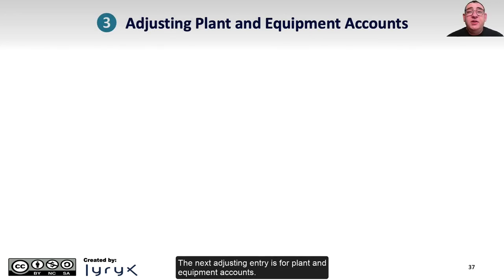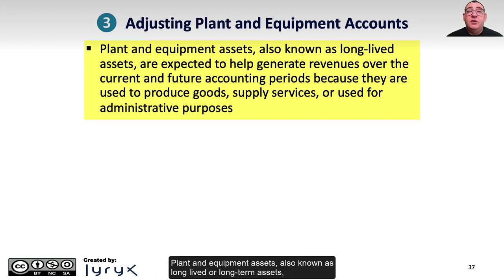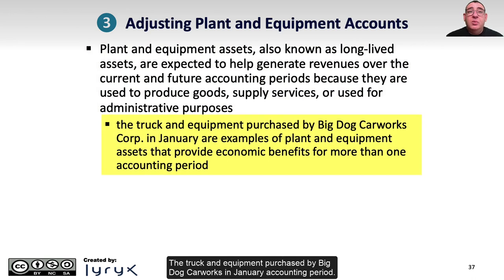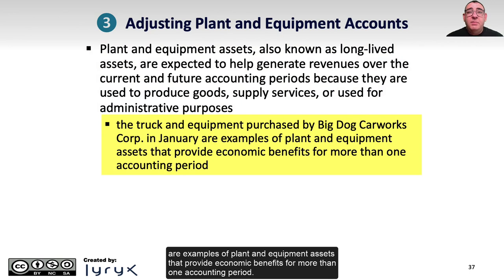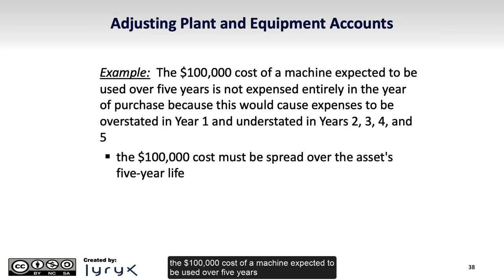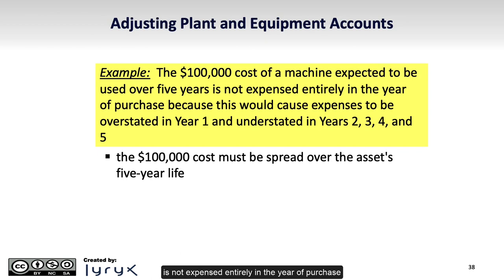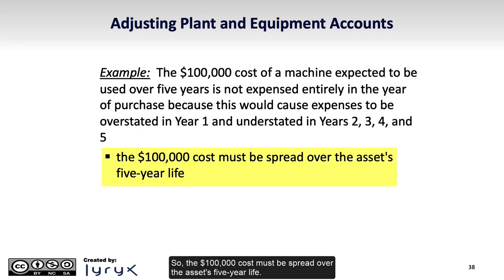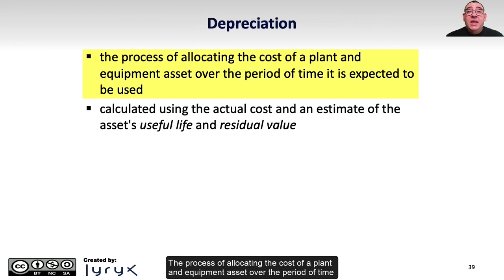The next adjusting entry is for plant and equipment accounts. Plant and equipment assets, also known as long-lived or long-term assets, are expected to help generate revenues over current and future periods because they're used to produce goods, supply services, or for administrative purposes. Because they're useful for more than one accounting period, their costs must be spread over the time they're used to satisfy the matching principle. The process of allocating the cost of a plant and equipment asset over its expected useful life is called depreciation.